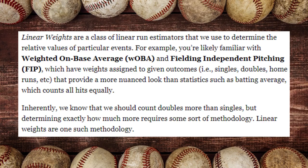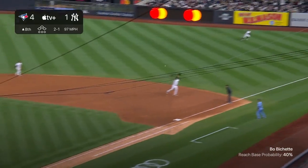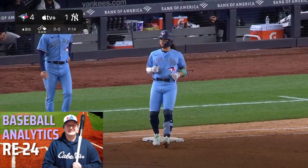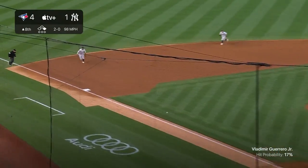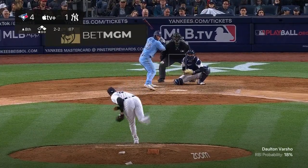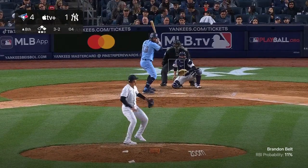To calculate linear weights, we need to find all instances of a particular base-out state and find the total number of runs scored from that time until the inning ends. For example, maybe the Toronto Blue Jays get a lead-off single. They're now in one of the 24 base-out states — a runner on first with nobody out. From that point, we track how many runs the Blue Jays score in that inning, whether that's zero, one, two, three, or more, and that contributes to the overall total of that particular base-out state.